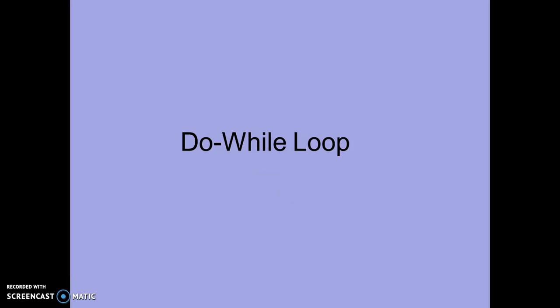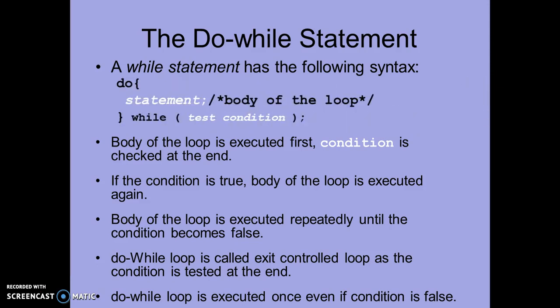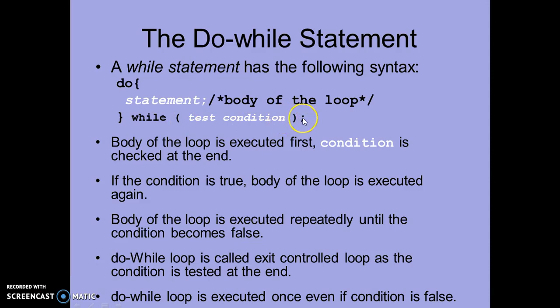Today we will discuss the do-while loop. The do-while loop can be written in the following format: start with 'do', then within curly braces write the statement — this may be referred to as the body of the loop — and after closing the curly braces write 'while', within parentheses write the test condition, followed by a semicolon.